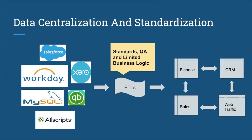The main thing a data warehouse does is it centralizes and standardizes all of the data from your company's various applications. These applications could be internal, where they're very custom and your own company operates them, or they could be third parties like Salesforce, Workday, or QuickBooks. A lot of these modern third-party applications have some way of pulling data out and using it to analyze for other things.